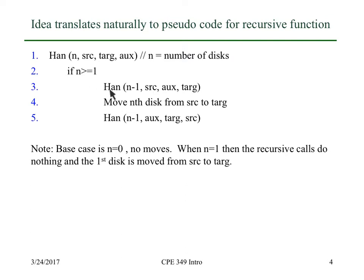Now if there's greater than or equal to one disk, then what we'll do is call Hanoi on n minus one disks. We're going to move the n minus one disks from source to auxiliary. The middle spindle is the auxiliary spindle, and we use the target as our extra spindle to help us do that. Then the second move is to move the nth disk from source to target, and then finally we move the n minus one disks that are now on aux to target, using source as the extra spindle.